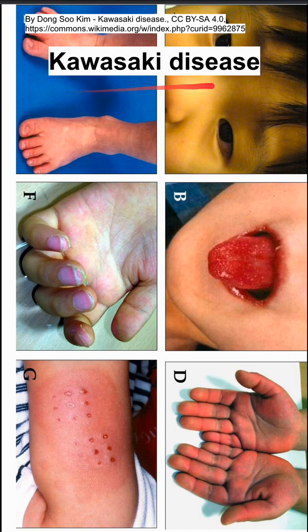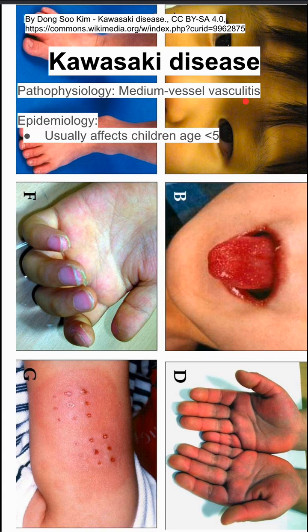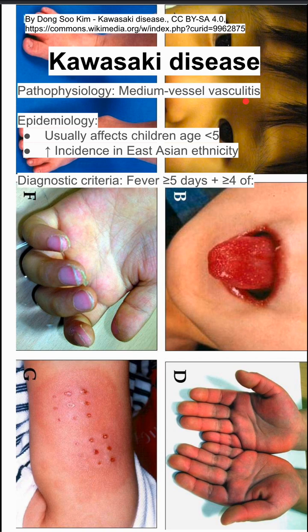Here's a summary of Kawasaki disease. The pathophysiology, in short, is that it's a medium vessel vasculitis. Epidemiology: it usually affects kids less than five years old, and it has an increased incidence in East Asian ethnicity.